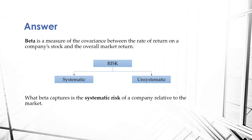What beta captures is the systematic risk of a company relative to the market. Modern portfolio theory states and assumes that through diversification, you can actually eliminate unsystematic risk. Because if you hold a thousand equities, and one company experiences some random event that impacts only them, the net impact on your overall portfolio is very limited and probably will not be reflected. So you can really diversify away unsystematic risk.